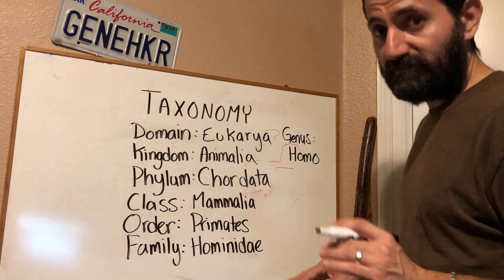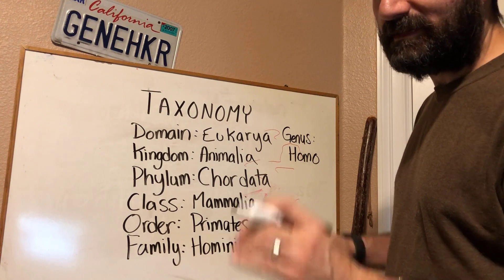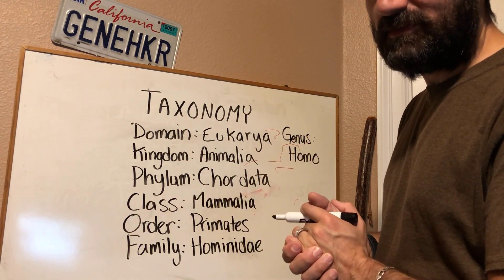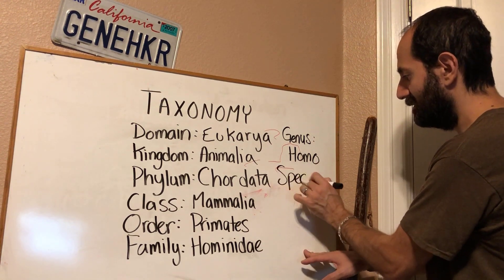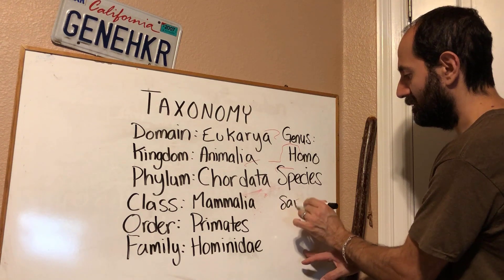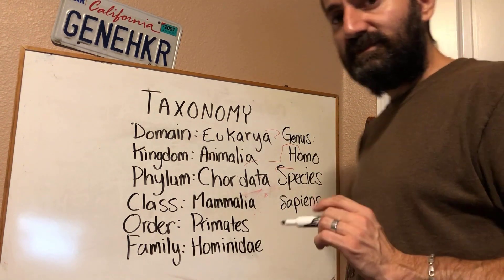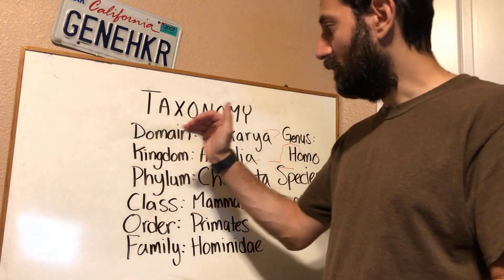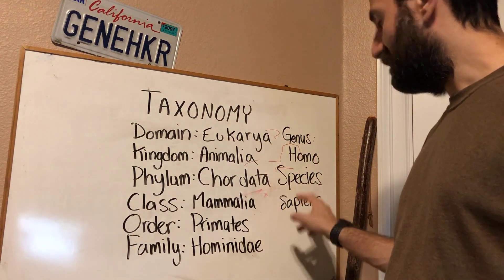And then we have the most specific category of taxonomy, and that specific category is species. Species is sapiens. So you see there — this is our taxonomical hierarchy. We are in the domain eukarya, and the species sapiens.